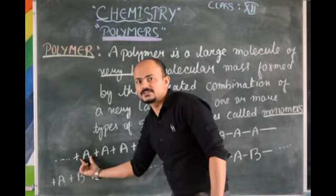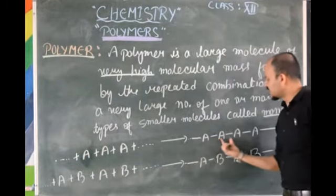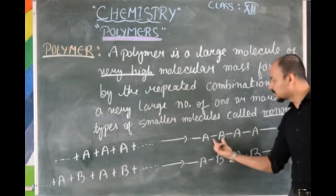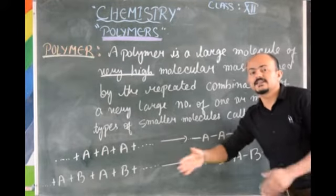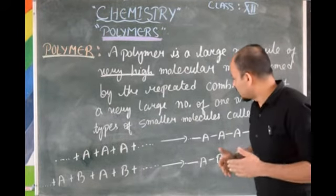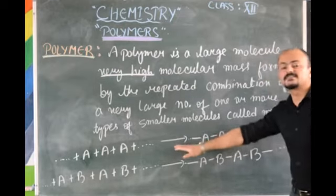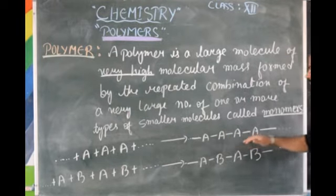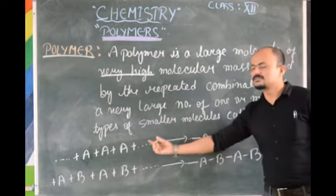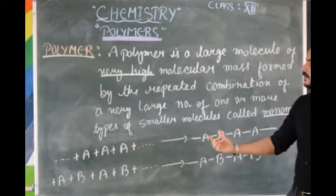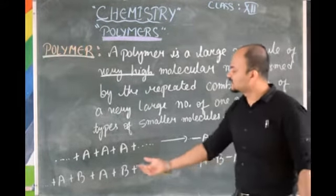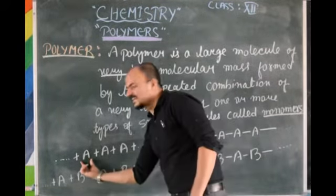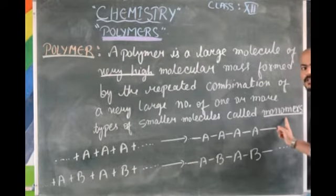But after polymerization, what happens is all these A are bonded together. This A is bonded with another A, and this A is again bonded with another A. Whenever they form a bond between themselves and this chain is very very large, then this structure — the compound of chain after bond formation between A — is known as a polymer. Now this A is being repeated, and this individually A is known as a monomer.